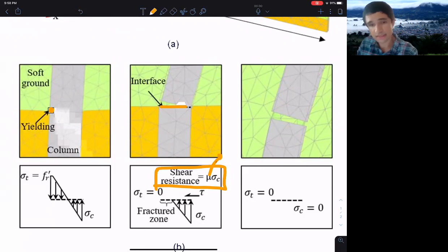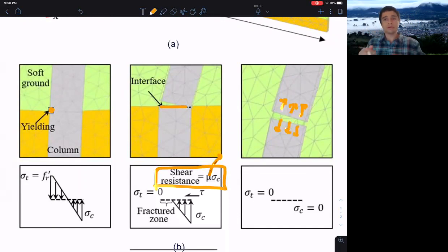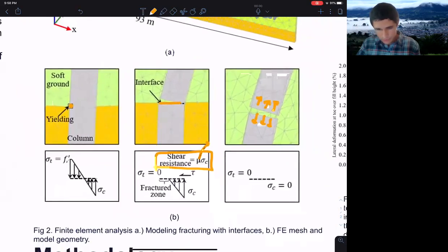This interface allows, when the shear resistance is achieved or is greater, it can slip. And also, when there is tension, it can separate. This is how we made this.